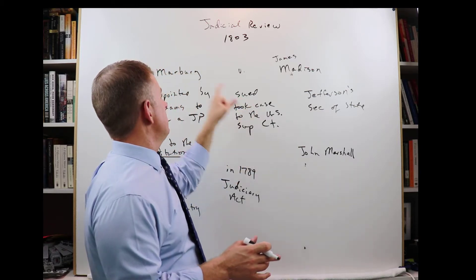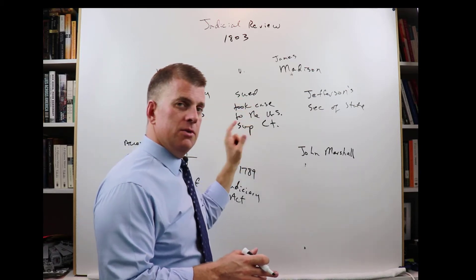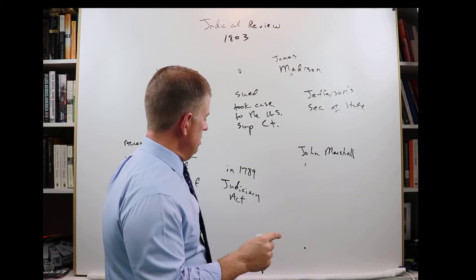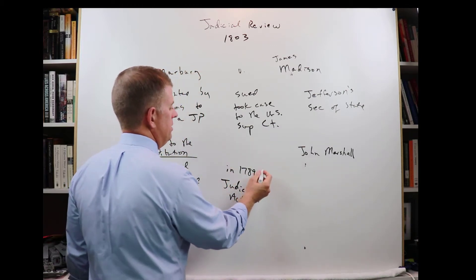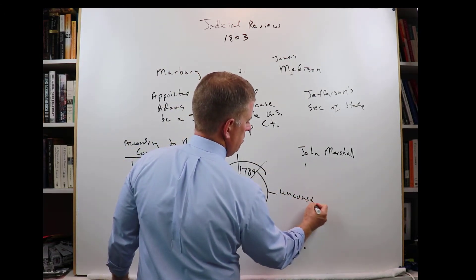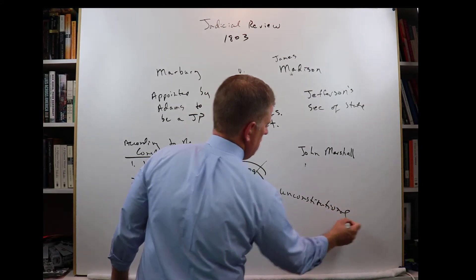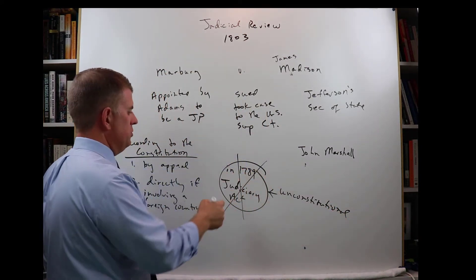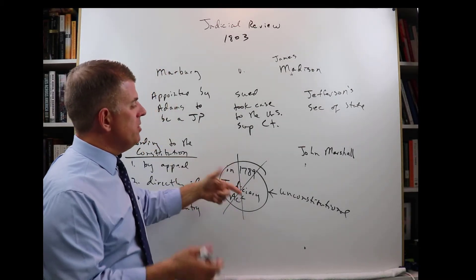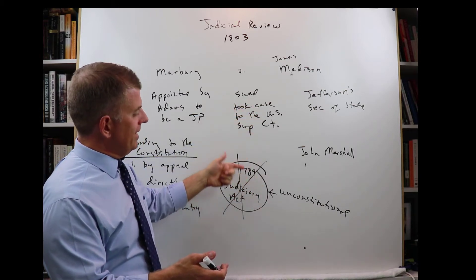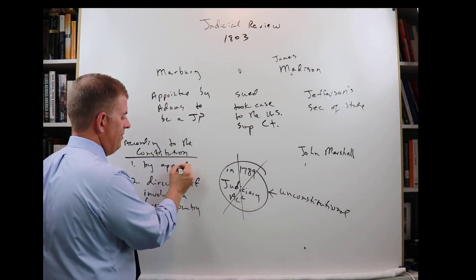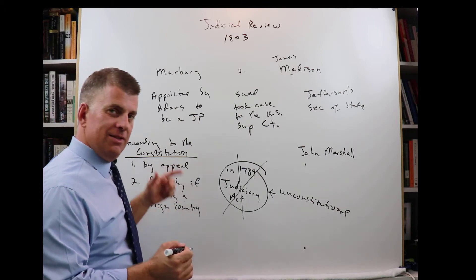Now, why did they say that? Why did they say that he should not have taken his case to the Supreme Court, even though this law passed by Congress said that he could do it? What they said was, this law, this Judiciary Act, they ruled it to be unconstitutional. They said that this law was unconstitutional because it went against the Constitution. And it did. It gave another way to get to the Supreme Court for a case, for a lawsuit to get to the Supreme Court that did not follow these two ways listed in the Constitution.